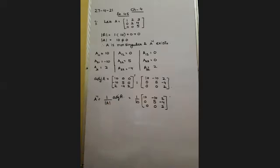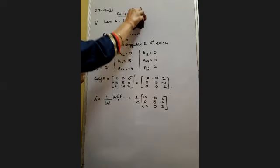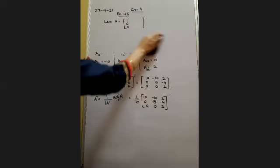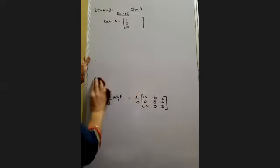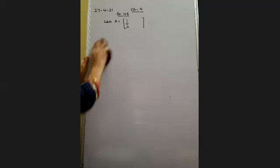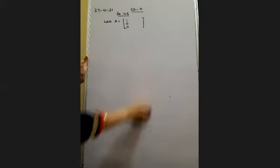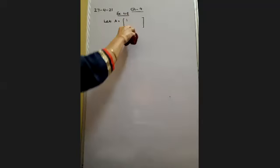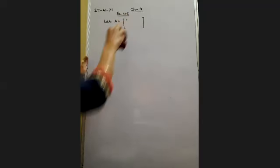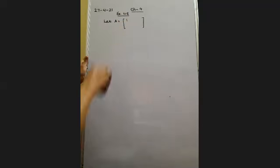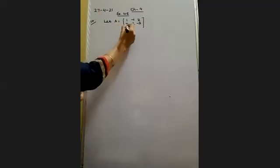Now we will do question number 10. Find the inverse of the matrix — same method. The matrix is: 1, 0, 0; 0, 2, minus 3; 3, minus 2, 4. First we will find out the determinant.